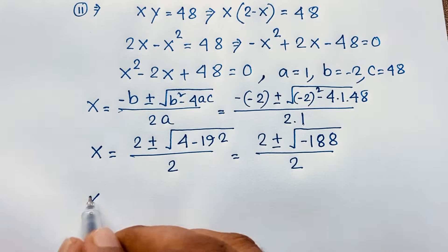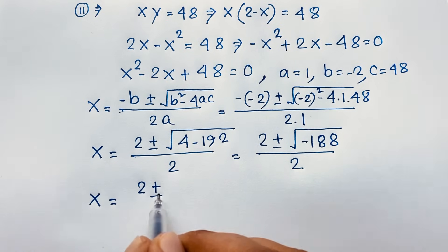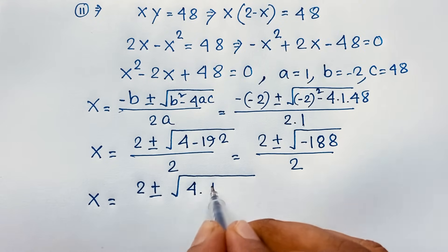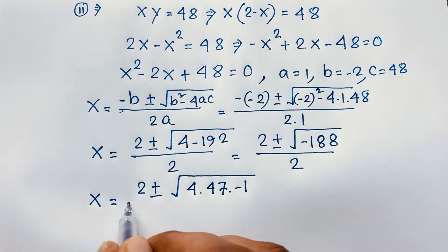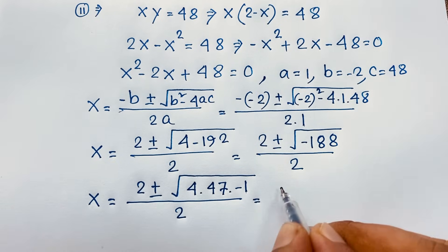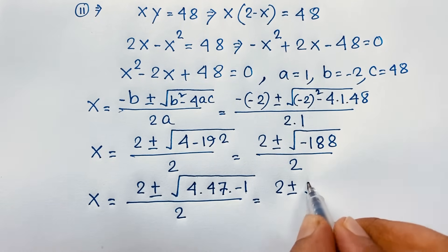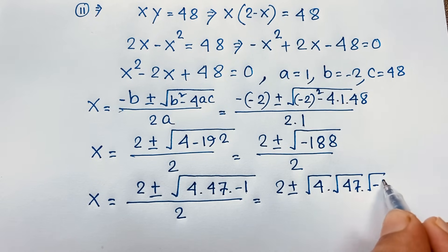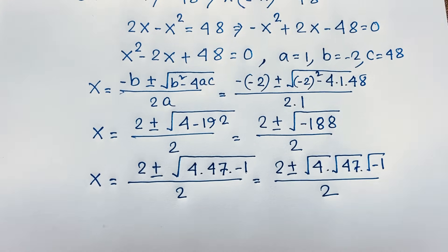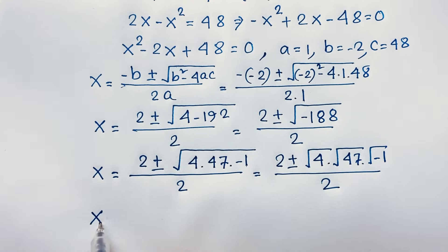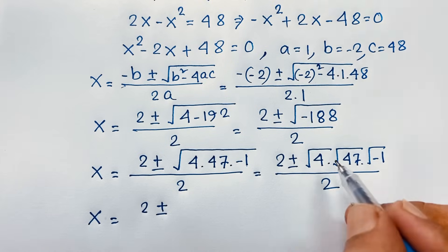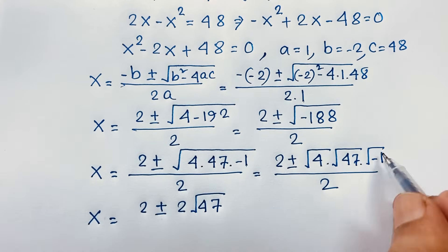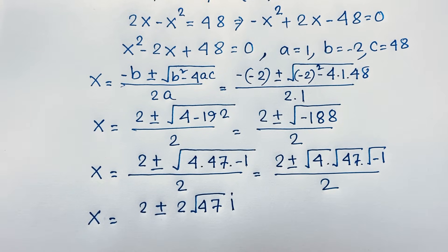So x is equal to 2 plus or minus square root of negative 188. We can write this as 2 plus or minus square root of (4 times 47 times negative 1) over 2. This value becomes 2 plus or minus square root of 4 times square root of 47 times square root of negative 1 over 2. Since square root of negative 1 is i, we are finding a complex number — there is no real solution.